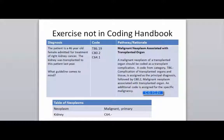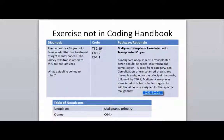A malignant neoplasm of a transplanted organ should be coded as a transplant complication. The guideline tells us we're going to use a code from category T86, which is complication of transplanted organs and tissues, as our principal, followed by C80.2, malignant neoplasm associated with a transplanted organ, and then an additional code assigned for the specific malignancy. So the guideline has already given us two codes we know we have to use — the T86 category and the C80.2 code — and tells us we need to look up whatever malignancy she has.